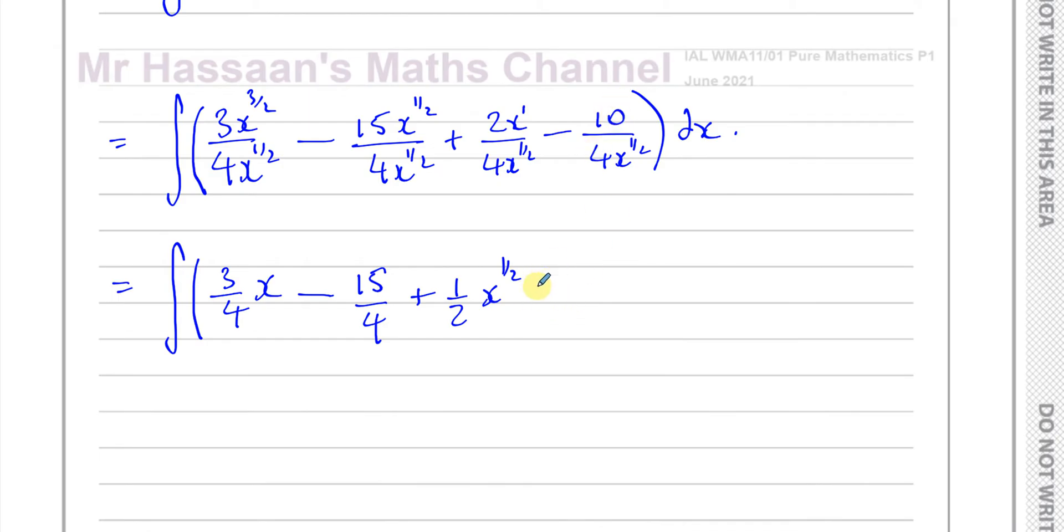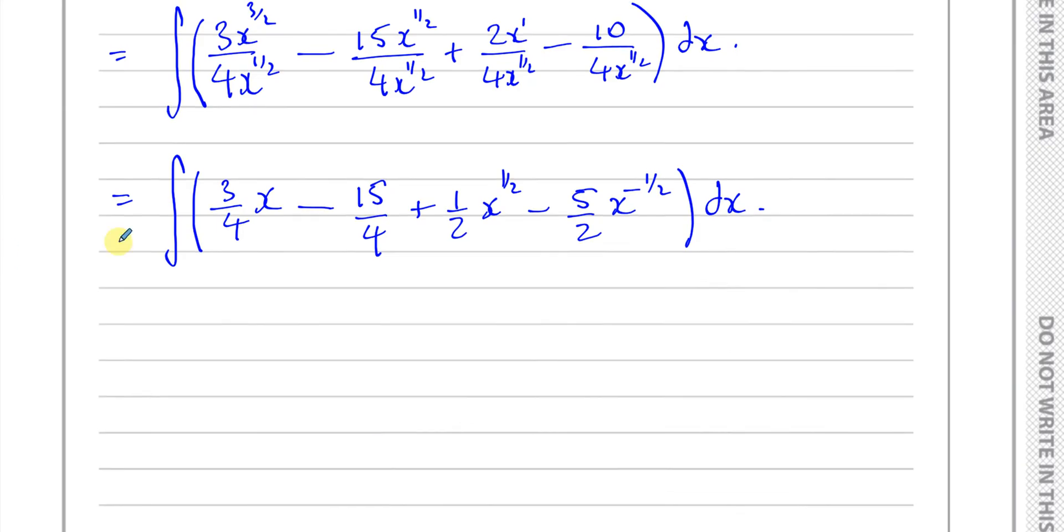And finally you have minus 5 over 2—10 over 4 gives you 5 over 2. And this x can be written on the top as to the power of minus a half. That's how you should write it when you're getting ready to integrate. All the x's must be written on the numerator. Now I can integrate by adding 1 to each power and dividing by the new power.